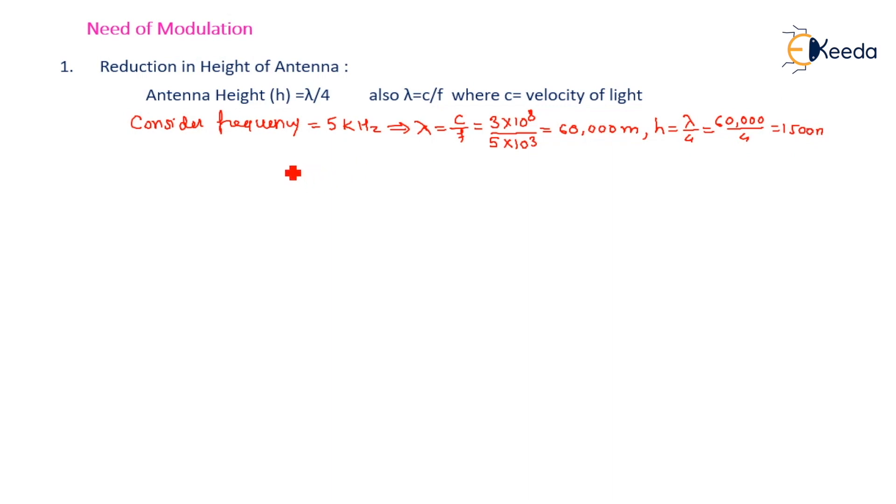Such a huge height antenna practically becomes impossible to install because usually we install the antenna vertically upward to cover a longer range of communication. Now consider frequency of 1 MHz, a higher range of frequency. λ = c/f, that is 3 × 10^8 divided by 1 × 10^6, equal to almost 300 meters. Hence h can be calculated as λ/4, directly 75 meters.